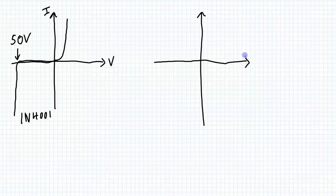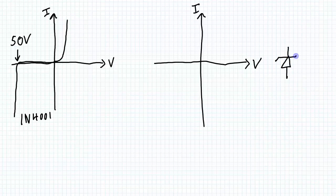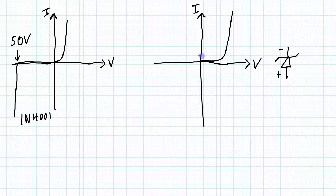Now let's look at the characteristic curve for a Zener diode. It turns out the Zener diode is pretty similar to the rectifying diode. Starting with zero voltage applied, the Zener diode is indicated with the two little arms on the symbol. Applying voltage in the forward direction gives the same curve — at about 0.65 to 0.7 volts, a silicon Zener diode turns on, just like the 1N4001.